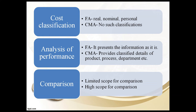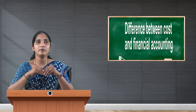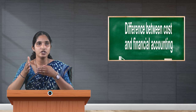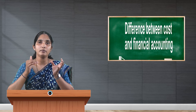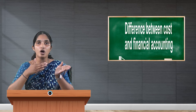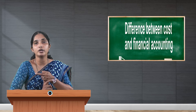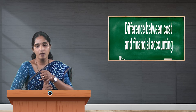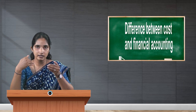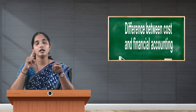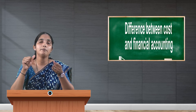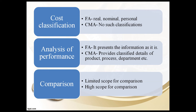The next difference is cost classification. Financial accounting divides financial information into three types of accounts: real account, personal account, and nominal account. But cost and management accounting has no such classification; instead, it provides cost information for a particular production, particular process, particular department, or particular operations.